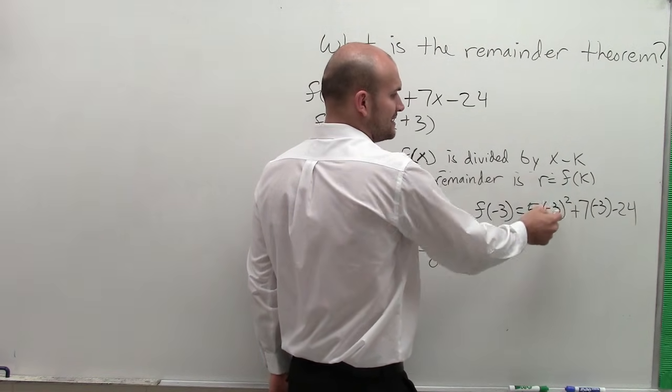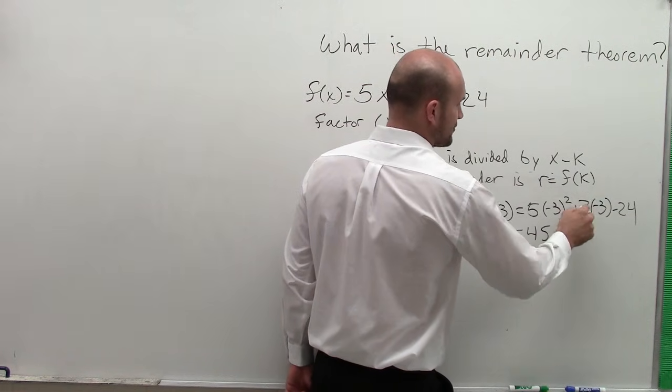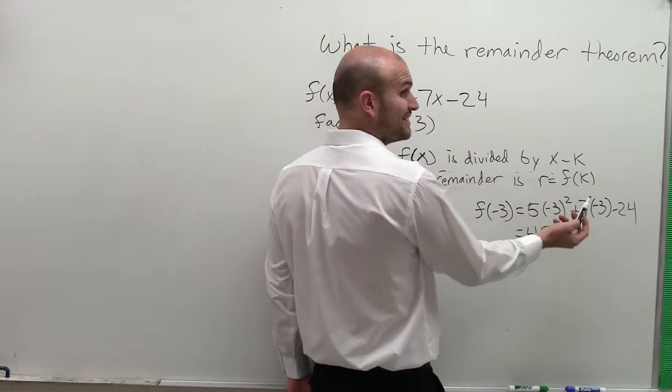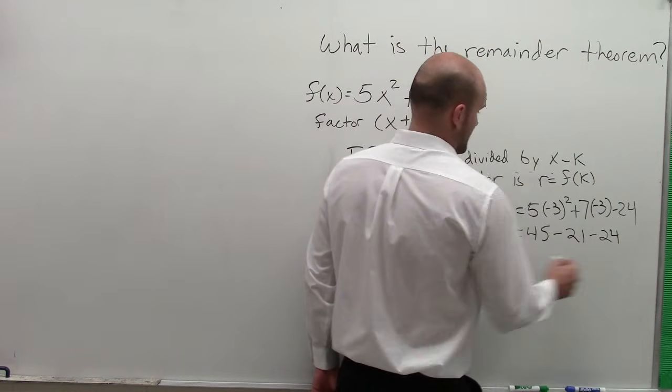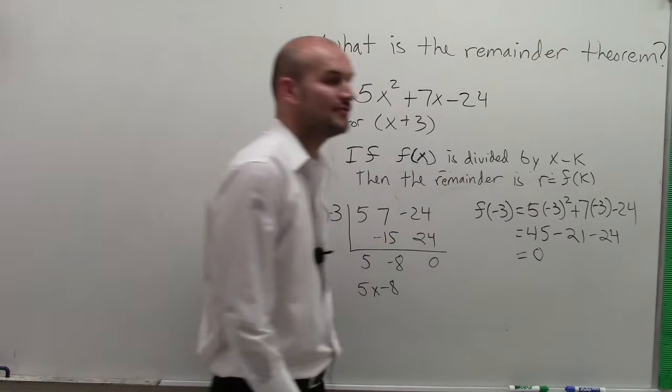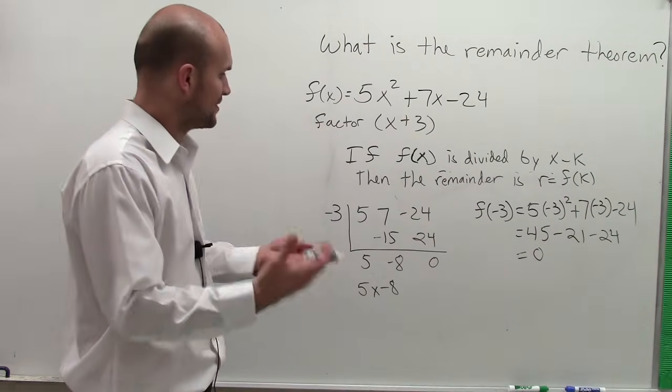Negative 3 squared is 9. 9 times 5 is 45 minus 3 times, well, you don't know it's minus yet, but negative 3 times 7 is negative 21 minus 24. And guess what, ladies and gentlemen? Of course, by the remainder theorem, it works. Now, this can work for any sort of number.